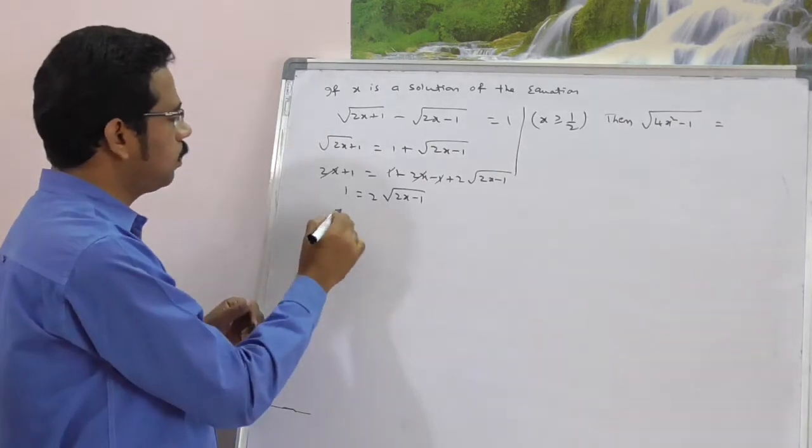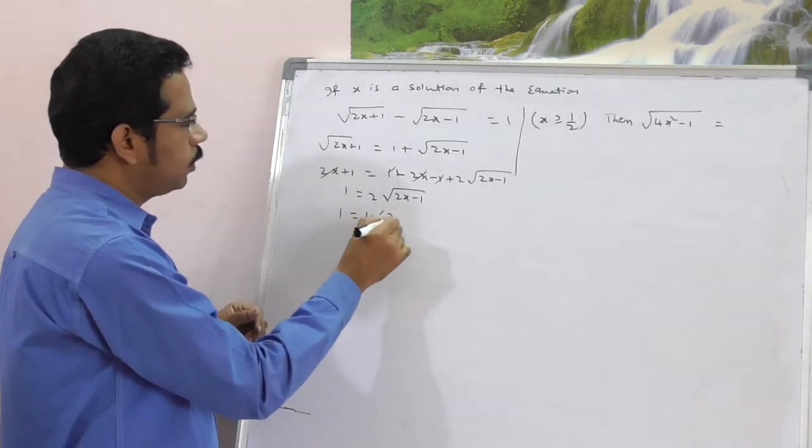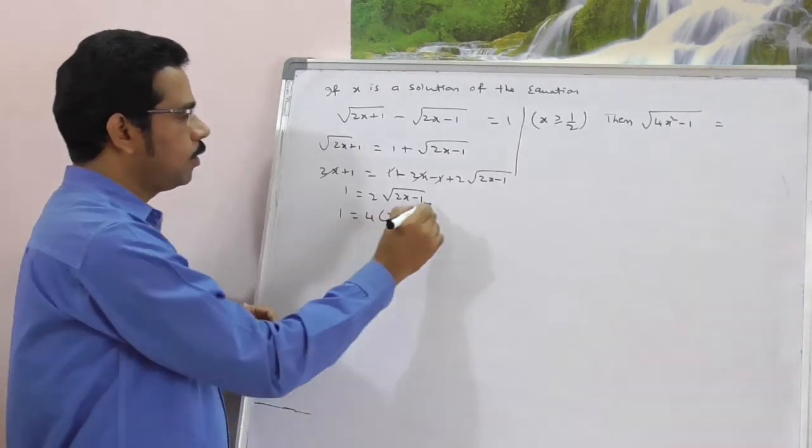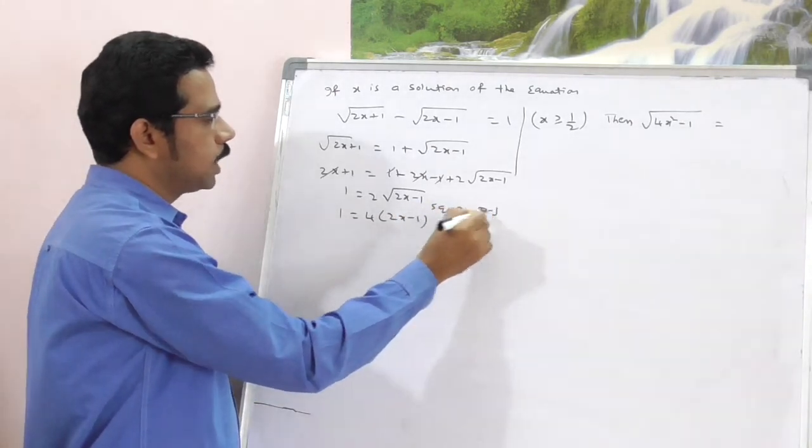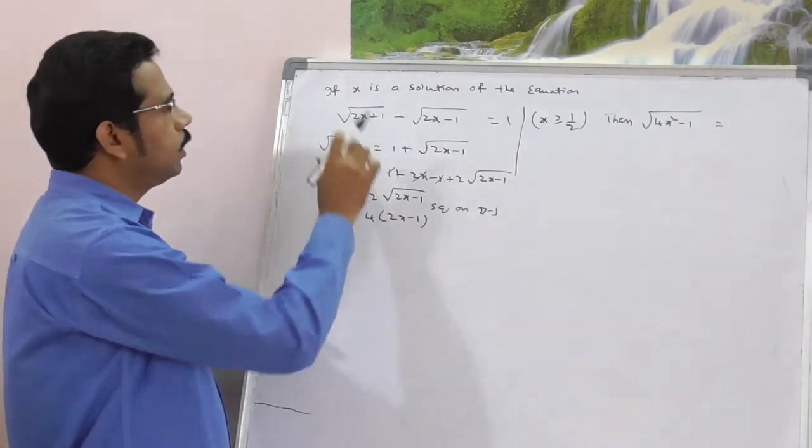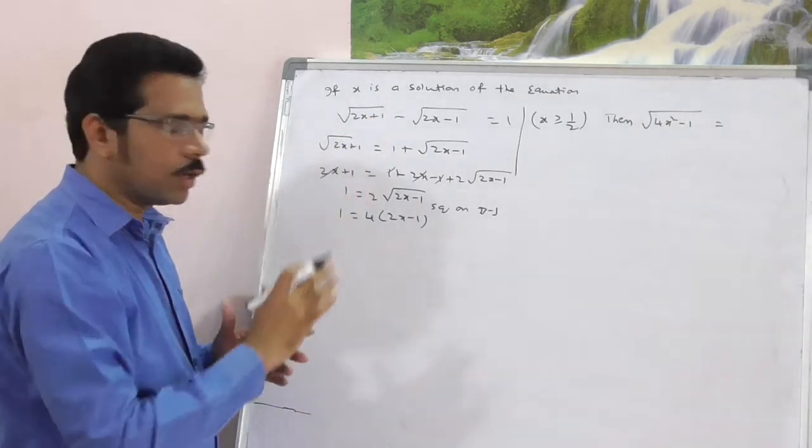Again, squaring on both sides, here you get 1 is equal to 4 of 2x minus 1. What we are doing? Squaring on both sides. So here, first we have to eliminate the square root. That is the concept.